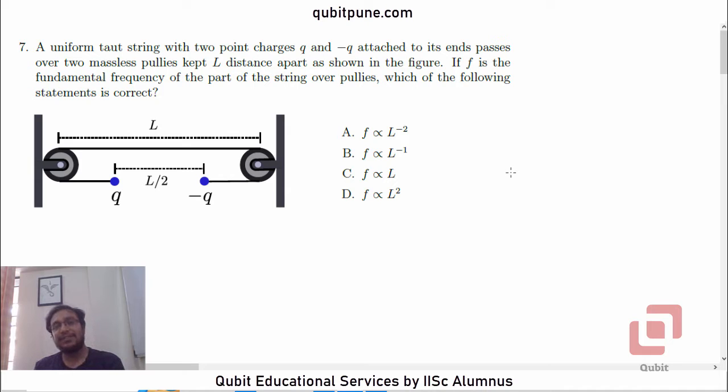In this video series, we are solving physics MCQs from the ISAR aptitude test 2022. In this video, we are going to solve question number seven, which combines concepts from two topics: electrostatic Coulomb force and superposition of waves, specifically laws of vibrating string.